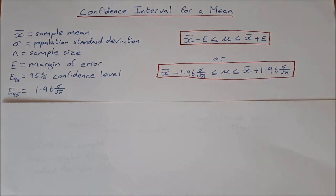In this video we're going to take a look at creating a confidence interval for a mean. This video we're going to look at making a 95% confidence interval, which is the most common confidence interval that we make.